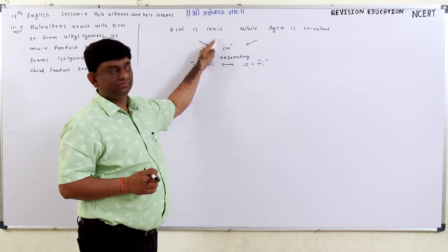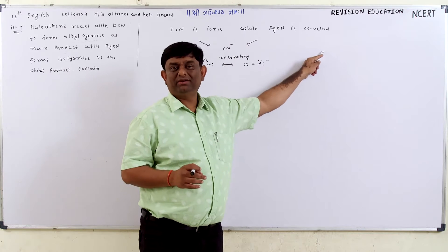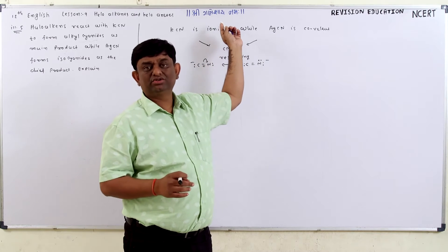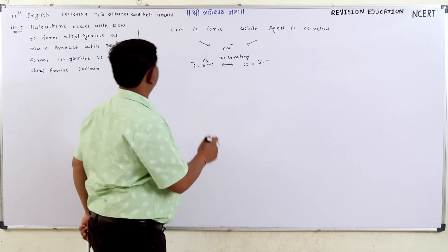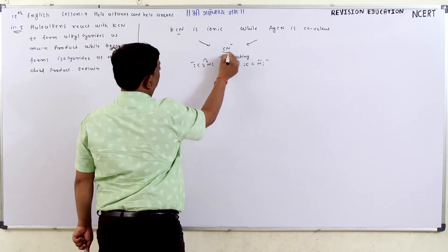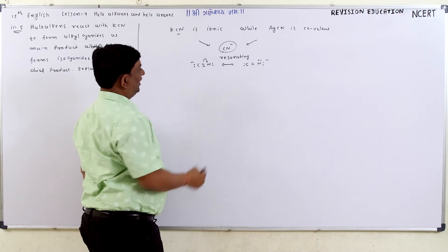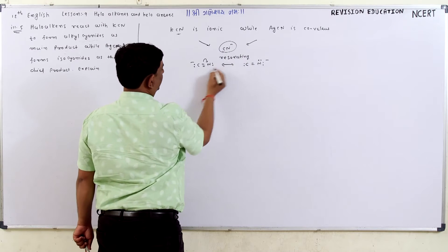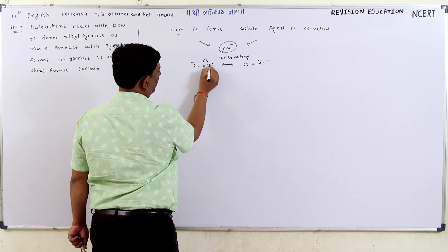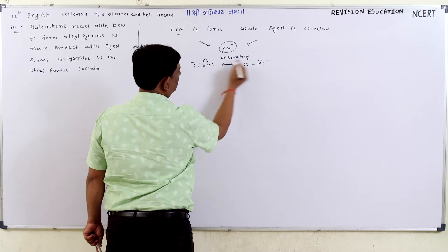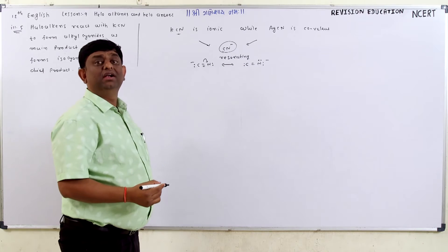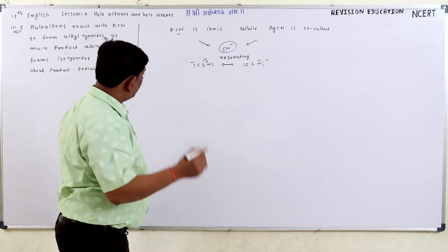KCN is an ionic compound. AgCN is a covalent compound. KCN is ionic, and both contain a cyanide group. These cyanide groups have a resonating structure. Now see, triple bond N, carbon has a negative charge. If nitrogen has the negative charge, then it will be on nitrogen. Now remember.